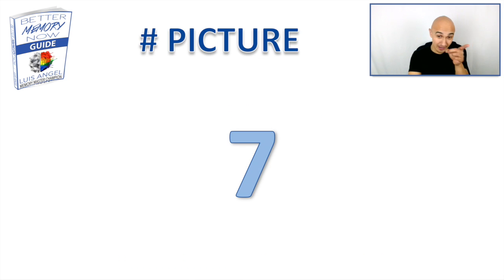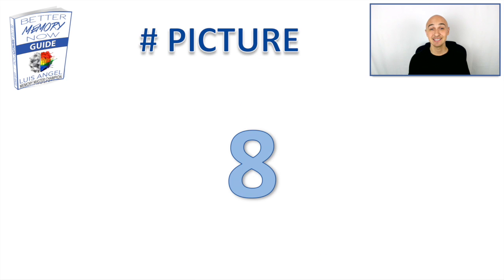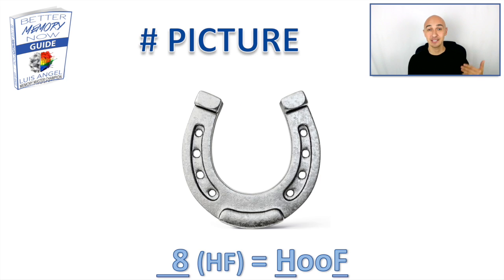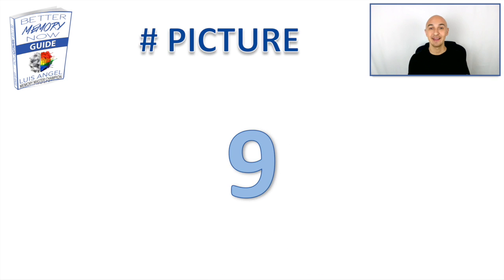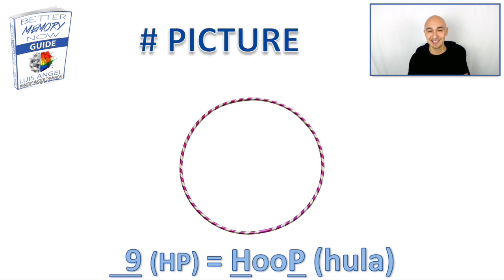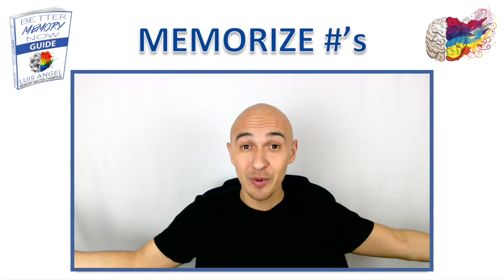Seven looks like the number seven — it's a hook. Eight has an F sound to it — that's right, it's a hoof. Nine has a B or P sound, associated to the ball of our foot — it's a hula hoop. Awesome, you're done with that. Now let's put this into practice.